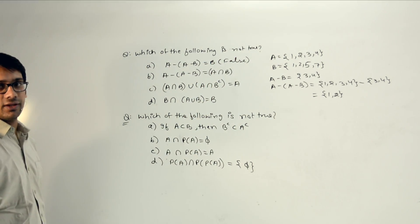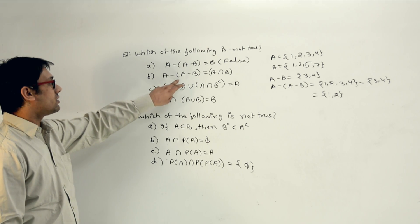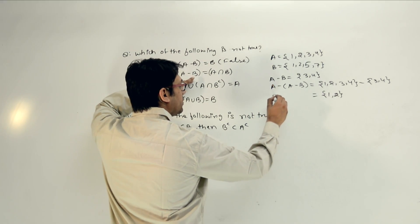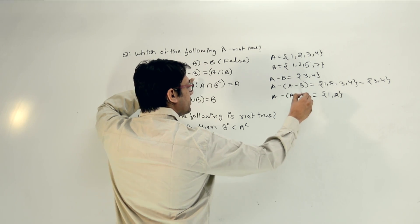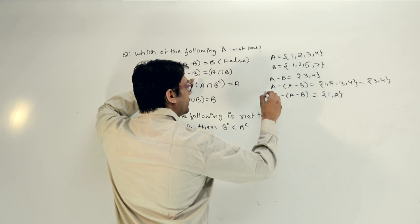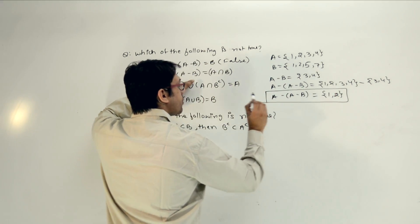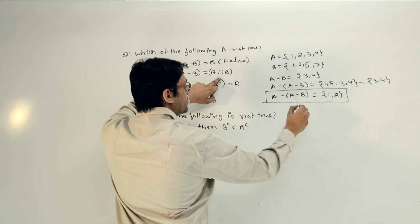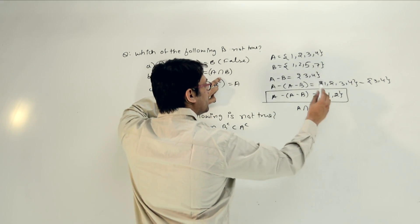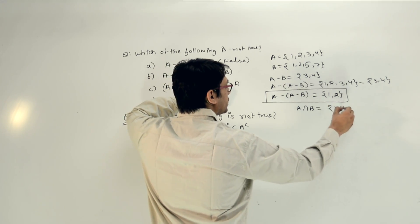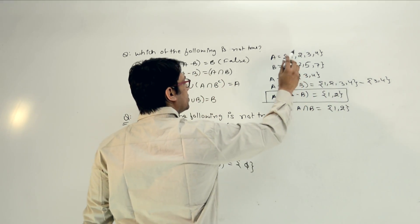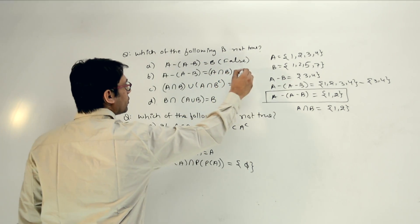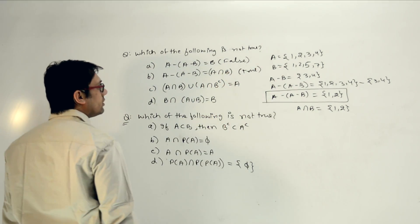Now the second option: is A minus (A minus B) equal to A intersection B? We already know A minus (A minus B) gives {1, 2}. And A intersection B — the values present in both A and B — also gives {1, 2}. So this one is true.